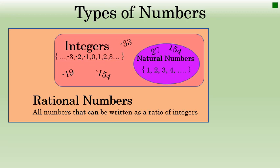For example, 27, a natural number, is 27 over 1. Negative 33, an integer, is negative 33 over 1. Other examples of rational numbers include fractions such as 4 ninths or negative 15 over 101.